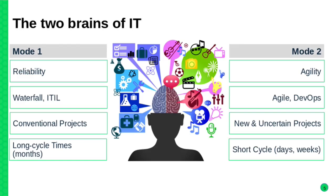This is what at SUSE we called the two brains of IT, and it's probably one of the challenges that we as a company are facing right now. Our customers usually came from the world where you have long waterfall projects, sysadmins, separated production IT departments, developers are not allowed to get even close to the machines. But at the same time those companies are also working on small websites or mobile apps and they need to deploy infrastructure very dynamically.